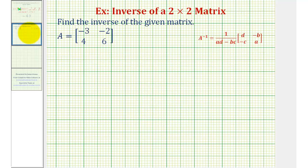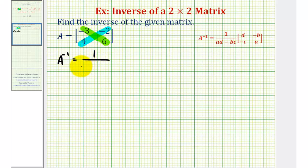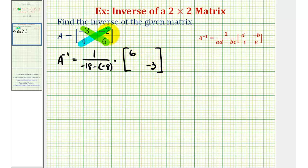So let's look at our example. We're going to find the inverse of matrix A. A inverse is going to be equal to one divided by the quantity A times D, or negative three times six, minus B times C, or negative two times four. So we would have negative three times six is negative 18, minus negative two times four, that's negative eight, times the matrix where we switch the positions of the elements negative three and six — we'll put the six here and the negative three here. For the other two elements we'll change the sign, so negative two becomes positive two and four becomes negative four.